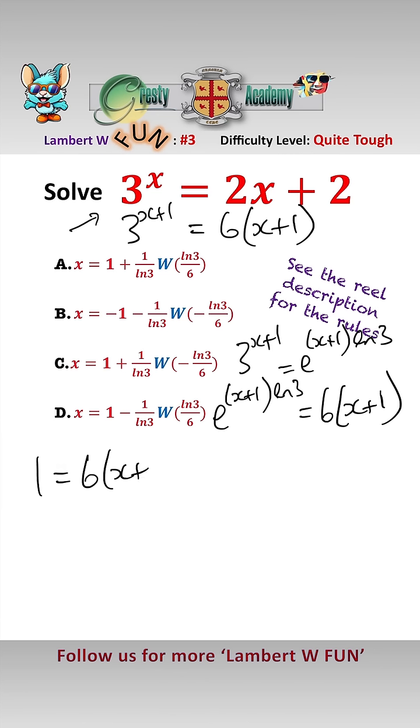that gives us 1 equals 6x plus 1 e to the minus log 3x plus 1. Multiplying by minus log 3 and taking the 6 over gives us minus log 3 over 6 equals minus x plus 1 log 3 e to the minus x plus 1 log 3.